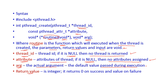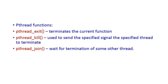The return value is an integer: if it returns 0, the thread creation succeeded; any other value indicates failure. Some important pthread functions: pthread_exit is used to terminate the current thread; pthread_kill is used to send a specified signal to a specified thread to terminate it; and pthread_join is used to wait for the termination of another thread before the current thread continues.